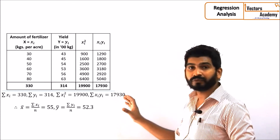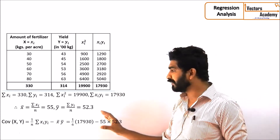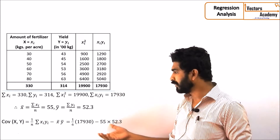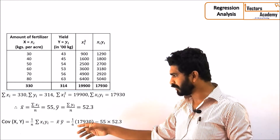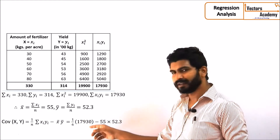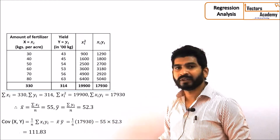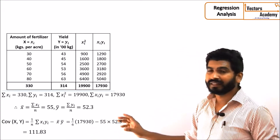The first thing we need to find out is the covariance between the variables x and y. The formula is: covariance = (1/n) × summation of xy minus x̄ into ȳ. So we will get the covariance between x and y.